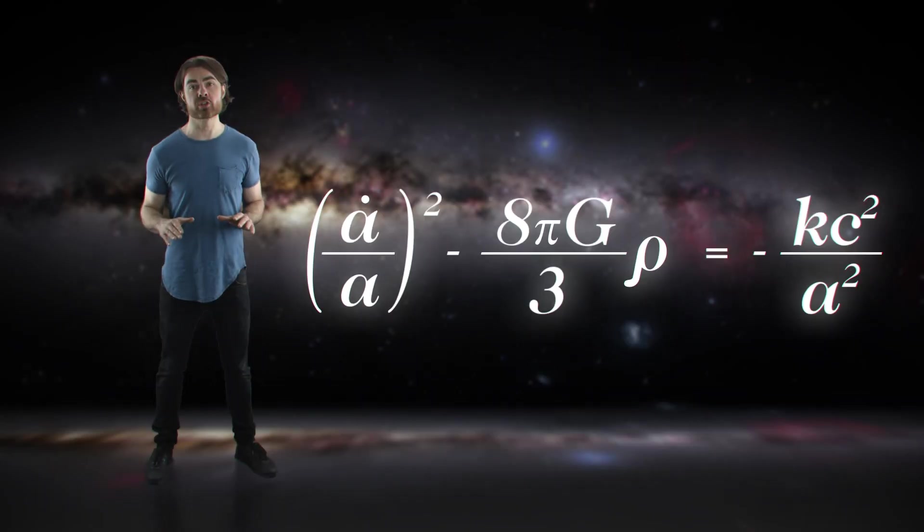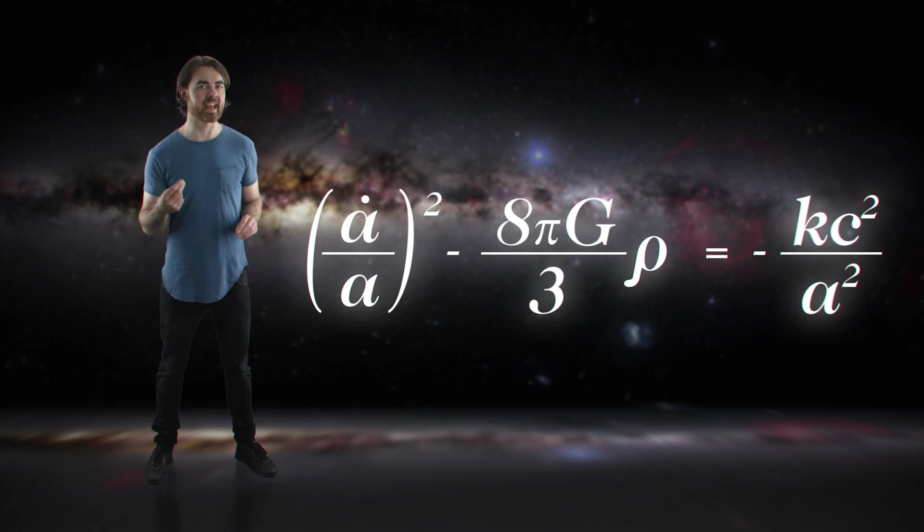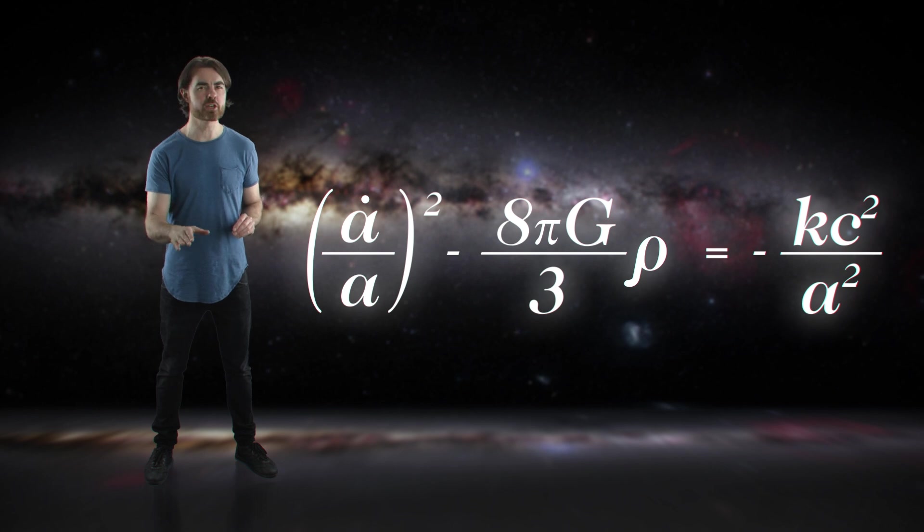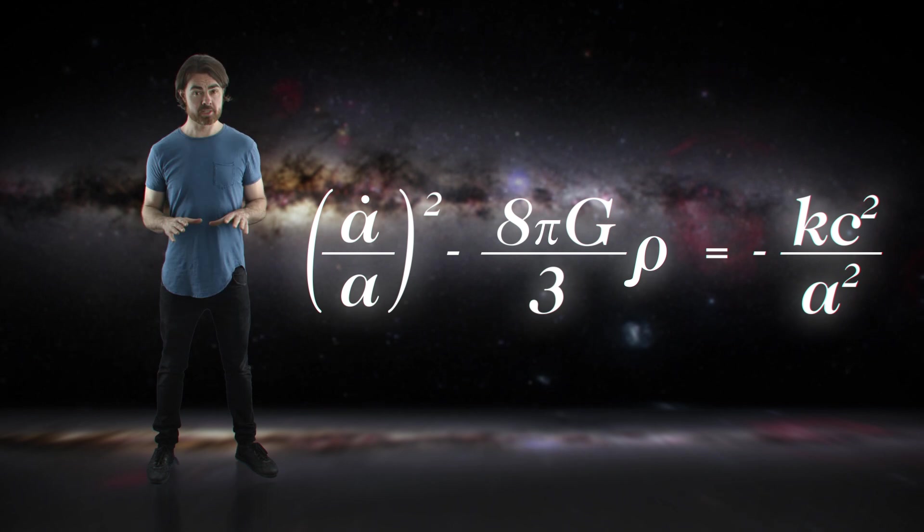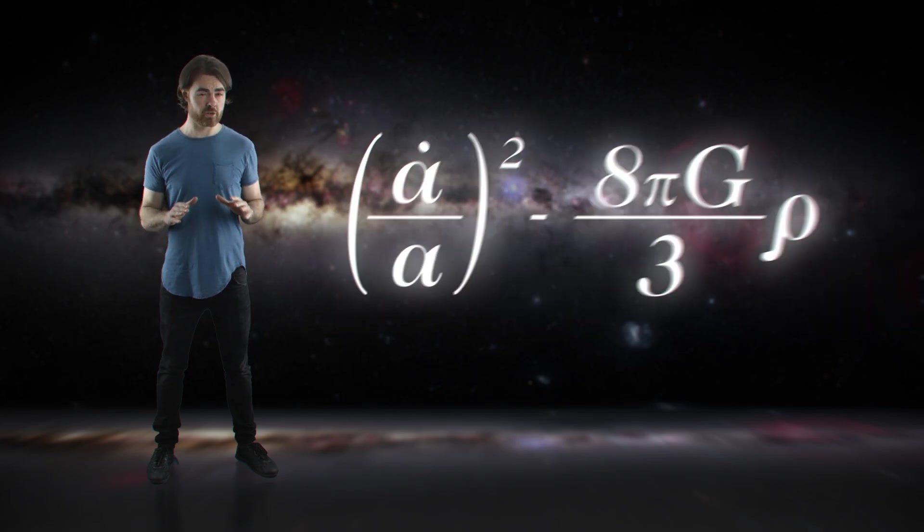That letter A is called the scale factor, and it represents the size of the universe, although it's more accurate to think of it as the average distance between galaxies. Now, the Friedman equation tells us how A evolves over time. That's what that A with the dot on top represents—the speed of the expansion of the universe. And for you guys who've taken some calculus, that's the time derivative of A. Let's stick to the left-hand side of the equation for the moment.